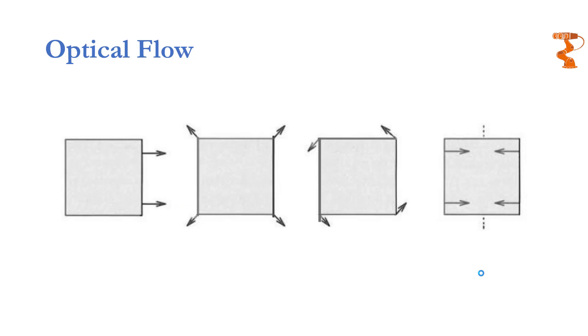Now each type of the motion will be represented by a specific velocity vector. The first type of motion, that is translation at constant distance, will be represented by a set of parallel vectors pointing towards the direction of motion.